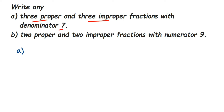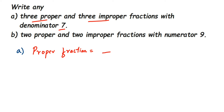In the first question, we need three proper and three improper fractions with the denominator 7, so 7 has to be fixed here. Proper fractions are the ones where the numerator is smaller. Let me fix the denominator as 7 for three proper fractions.